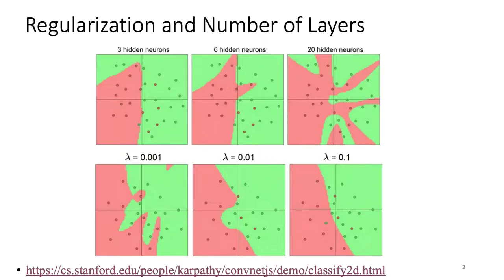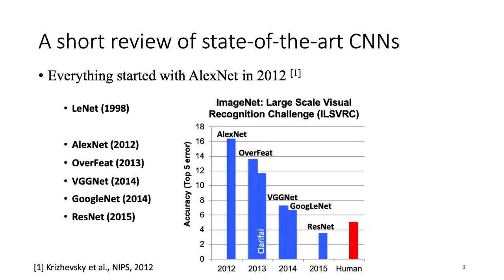The bulk of today's talk is a short review of state-of-the-art CNNs. We're going to start from LeNet, one of the oldest, then go to AlexNet, then Inception or GoogLeNet, and finally wrap up with ResNet.